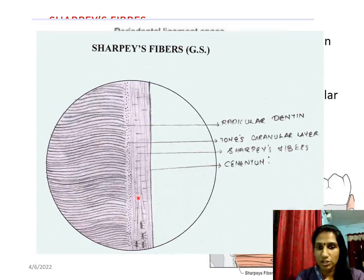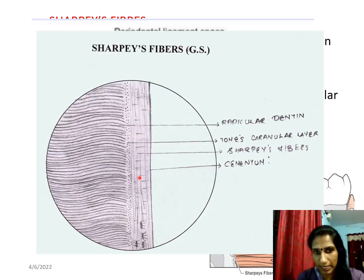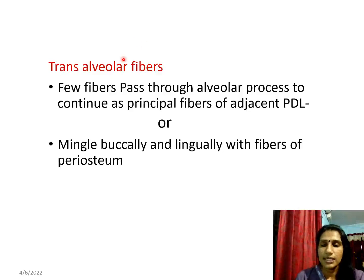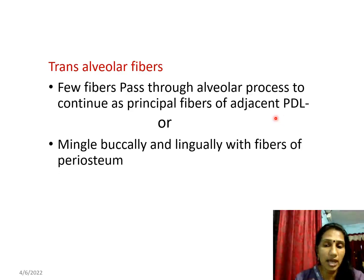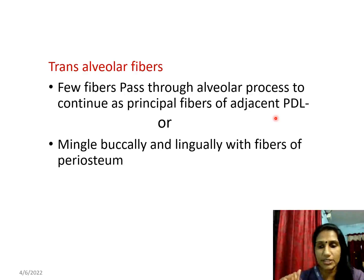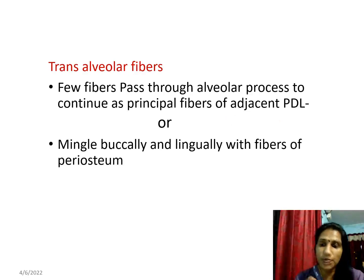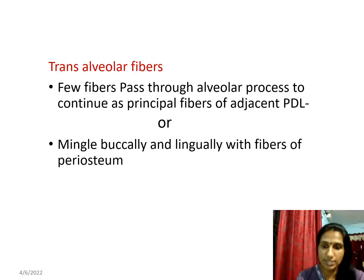This diagrammatic representation shows the periodontal ligament space. When fibers are inserted into the cementum, they appear as perpendicular fibers — these small black lines are your Sharpey's fibers. There is another set called trans-alveolar fibers, which pass through the alveolar process to continue as principal fibers of the adjacent periodontal ligament. They are a continuum of the principal fibers running through the bone to reach adjacent periodontal ligament fibers.